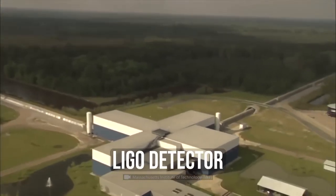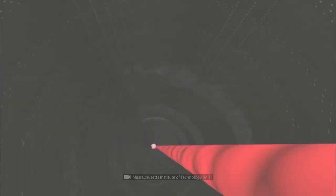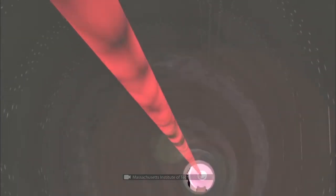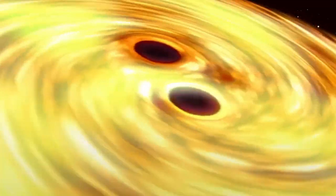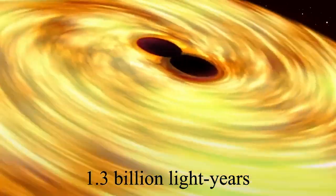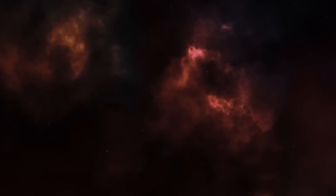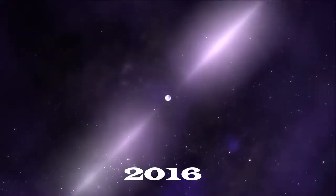LIGO is a pair of astronomical instruments situated in Washington and Louisiana in the United States that can detect these unusual waves. The collision of two black holes, which occurred around 1.3 billion light-years away, led to the first gravitational wave detection that was confirmed by the LIGO team in the early months of 2016.